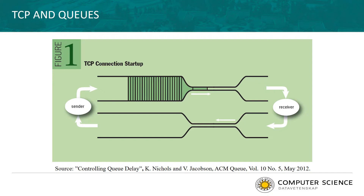Let us look at another illustration of what happens to the queue in the network. We have a TCP connection starting up, and initially we send a large burst of packets into the network. These packets will reach the bottleneck, where they will be spaced out because they need to go through this thin bottleneck. When the packets reach the receiver, the receiver will send an acknowledgement back to the sender. These acknowledgments travel back to the sender, and not until they arrive can the sender inject new packets into the network.